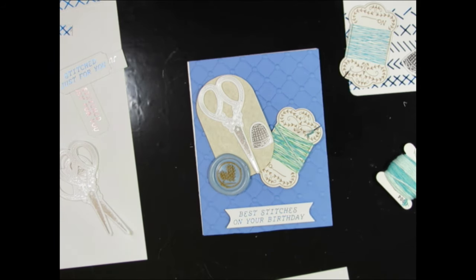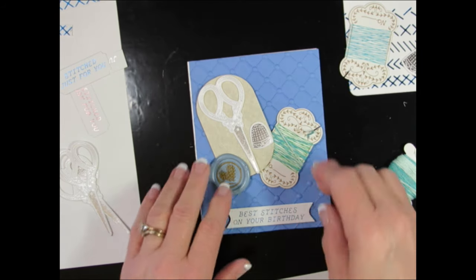Now Spellbinders sends me the Wax Seal, the Better Press, and the Stitching Die of the Month on a monthly basis. I purchase on my own the 3D Embossing Folder, the regular embossing folder, the Stamp and Die of the Month, the Glimmer of the Month. So you can see I'm a real big fan of all these clubs that they have. They also have a Large and a Small Die of the Month.